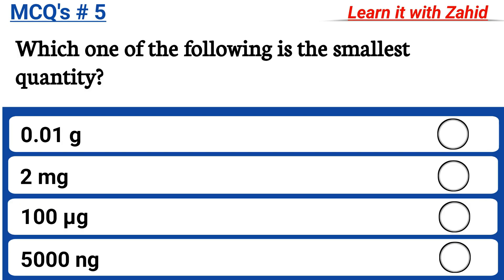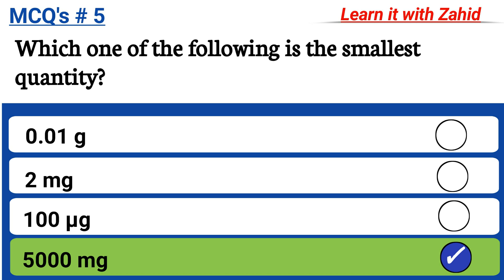Which of the following is the smallest quantity? 0.01 gram, 2 milligram, 100 microgram, 5000 nanogram. And the correct answer is 5000 nanogram.